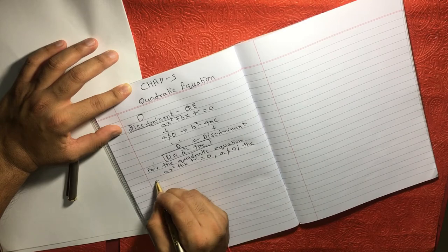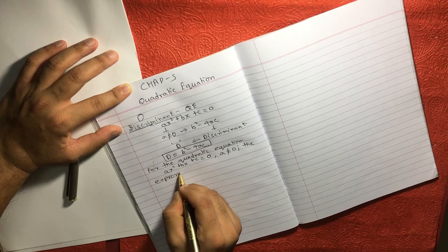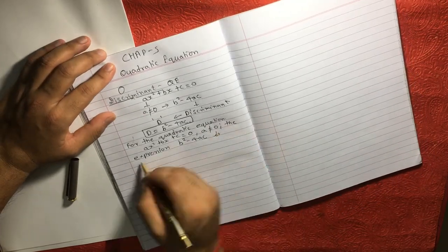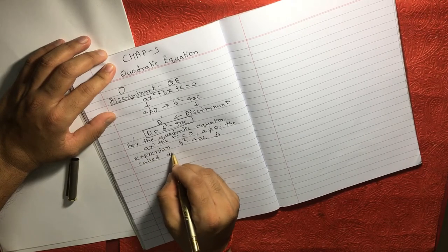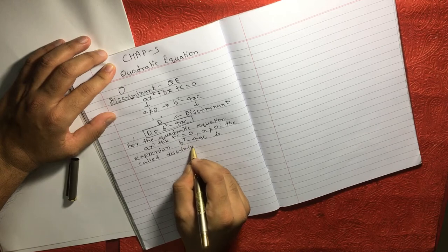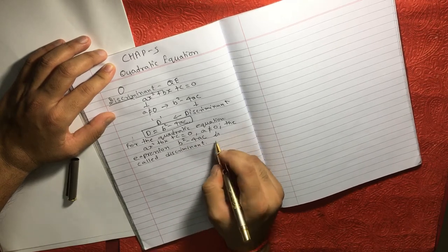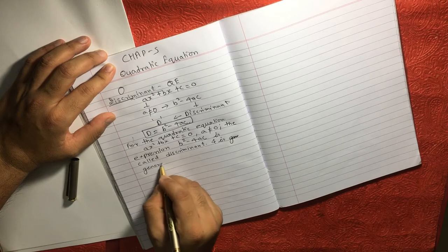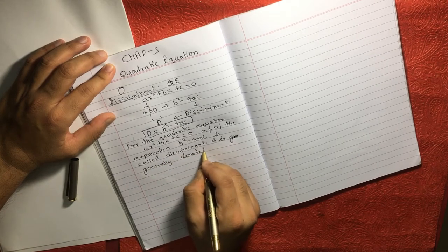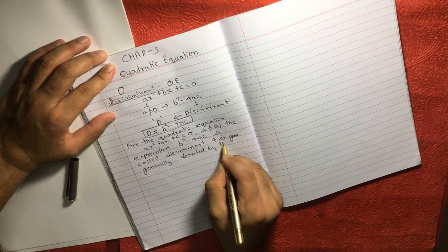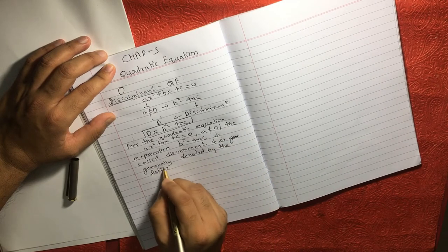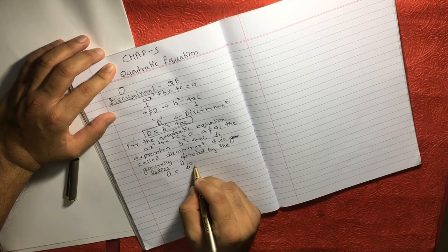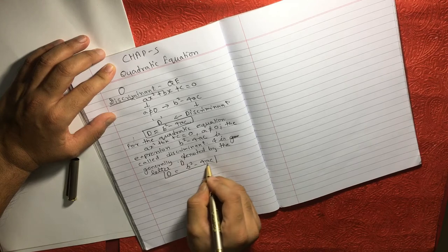For the quadratic equation, let's say AX square plus BX plus C is equal to 0, where A is not equal to 0, the expression B square minus 4AC is called discriminant and is generally denoted by the letter D. So D is equal to B square minus 4AC, you need to by heart this formula.